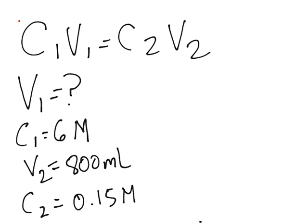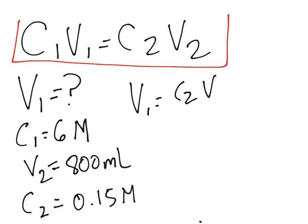Now, just using this formula, we have all the data we need. We can simply solve for V1. So we know that V1 will be C2 times V2 over C1. Just plug in the numbers.